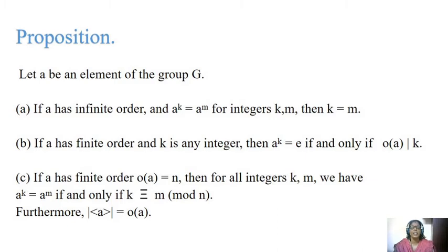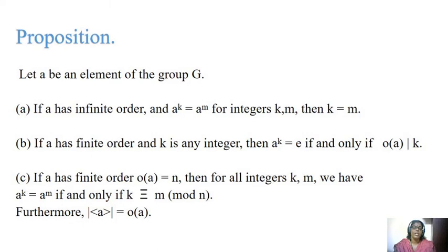If A has finite order and K is any integer, then A^K equals E if and only if the order of A divides K. In some cases the power of A becomes the identity. If A has finite order N, then for all integers K and M, we have A^K equals A^M if and only if K is congruent to M modulo N. Furthermore, the size of ⟨A⟩ gives the order of element A.